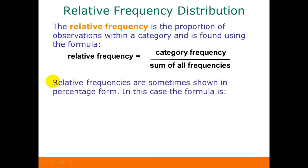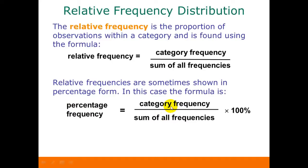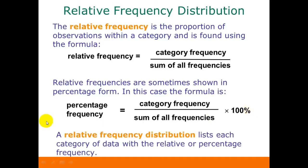Sometimes we want to represent relative frequencies in percentage form. The formula is the same: we take the category frequency and divide by the total number of observations, and then to get the percentage form, we just multiply that by 100%. So a relative frequency distribution lists each category of data and gives the relative or percentage frequency instead of the count.